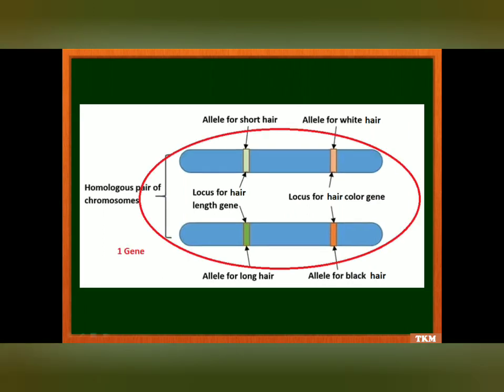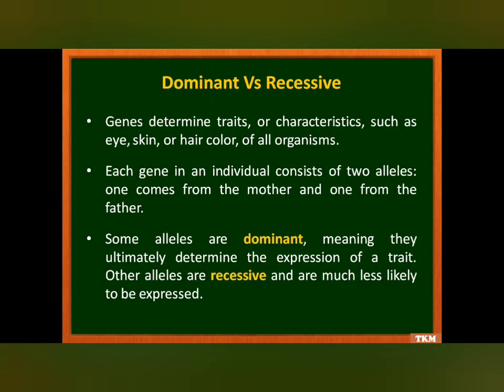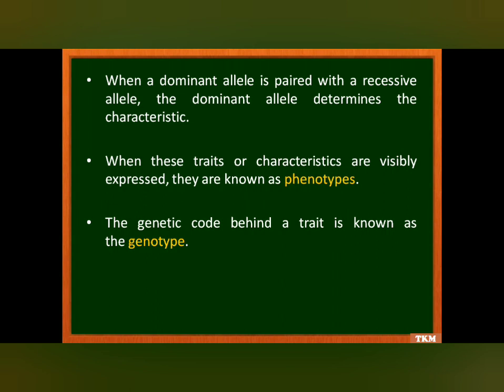This homologous pair of chromosomes constitutes one gene. Genes determine traits or characteristics such as eye, skin, or hair color of all organisms. Each gene in an individual consists of two alleles — one from the mother and one from the father. Some alleles are dominant and some are recessive. If a dominant allele is paired with a recessive allele, the dominant allele will determine the characteristic. When these traits or characteristics are visibly expressed, they are known as the phenotype. The genetic code behind a trait is known as the genotype.